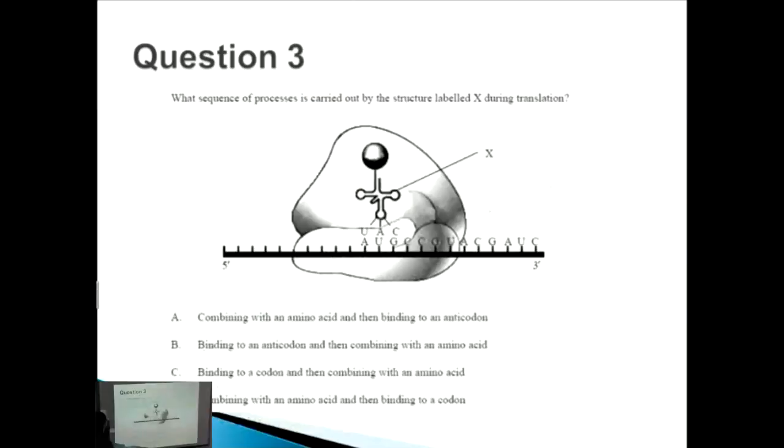Question three: what sequence of processes is carried out by the structure labeled X during translation? We've got this ribosome here with our mRNA (single stranded) going through the ribosome. This structure attaching here is our tRNA. On one side the tRNA has an anticodon - anticodon has the letter T in it, so that's the tRNA. The anticodon binds with a codon on the mRNA.